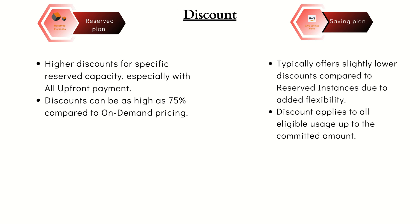The next point is type of discount. Saving Plan offers two types: the first is Compute Saving Plan, which offers flexibility across multiple services and regions; the second is EC2 Instance Saving Plan, which applies specifically to EC2 instances. Reserved Instance also comes in two varieties: Standard Reserved Instance and Convertible Reserved Instance.